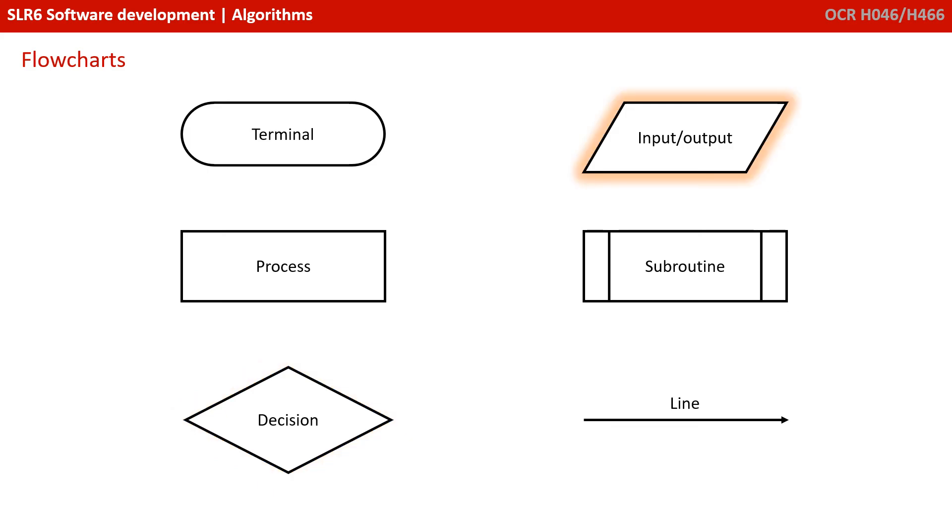Then you've got an input-output shape, and this represents the input and output of data to the algorithm. And you have a shape representing a call to a subroutine. A subroutine will have its own flowchart, but when you call it from the main program, you need to express that call using this symbol.